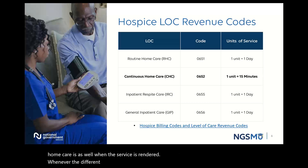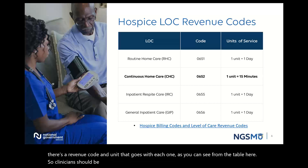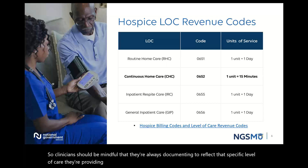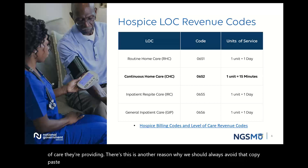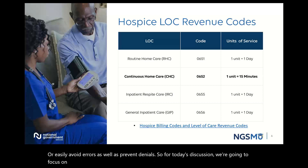Whenever the different hospice levels of care are delivered, they are placed on the claim and there's a revenue code and unit that goes with each one, as you can see from the table here. Clinicians should be mindful that they're always documenting to reflect that specific level of care they're providing. This is another reason why we should always avoid that copy-paste method of documentation. That's just a great way to avoid errors as well as prevent denials. So for today's discussion, we're going to focus on the general inpatient level of care, or as we often reference it for short, GIP.